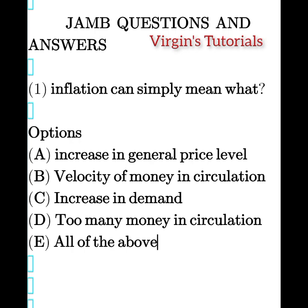Because Option B — velocity of money in circulation — is simply the number of times money changes hands. Option C is increase in demand, which can be likened to too many hands chasing fewer goods. And why are too many hands chasing fewer goods? It's because of too many money in circulation. That is why there is a rise in demand, and supply is constant.